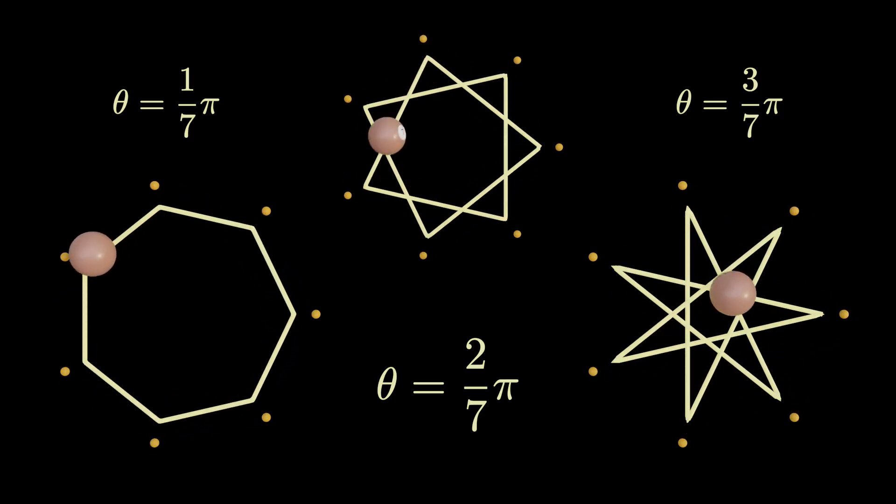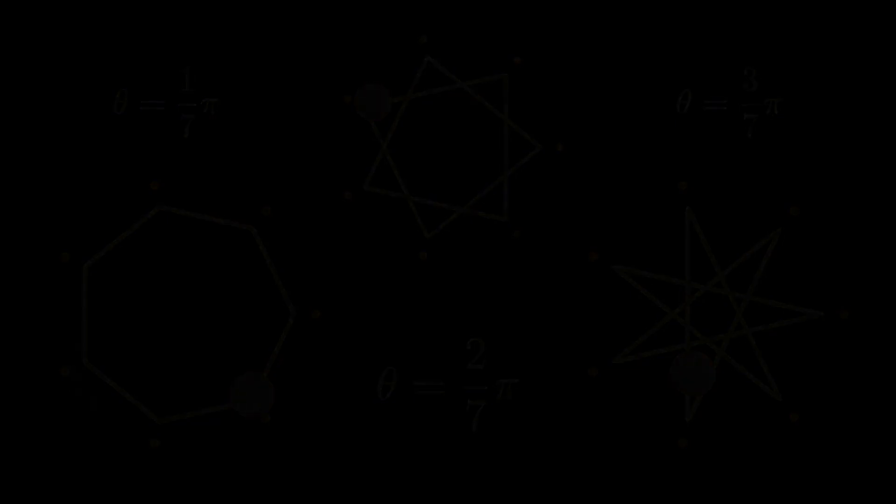In general, we find star-like shapes, and similar to the previous video, we find degenerate trajectories when the fraction is not in its simplest form, where numerator and denominator are co-prime. What happens if the angle is an irrational multiple of pi?